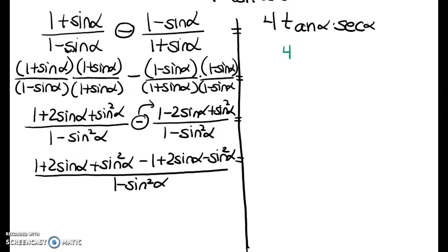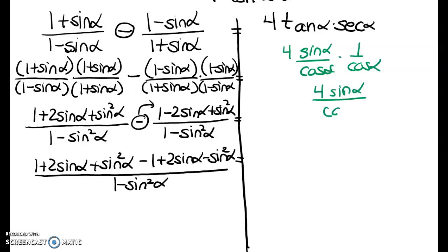I want you to notice that this is going to be sine over cosine over cosine, and this is going to be 1 over cosine. So I'm really going to be looking for this in my final answer. Keeping that right-hand side in mind, I need cosine squared in the denominator. So I'm going to change this — this is an alternative form of one of my Pythagorean identities — I'm changing that to cosine squared alpha.